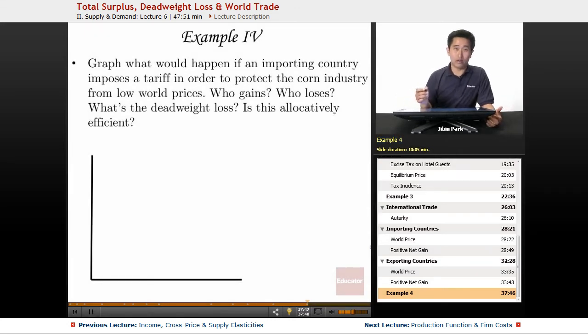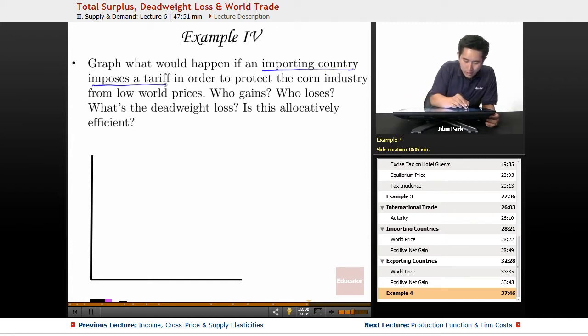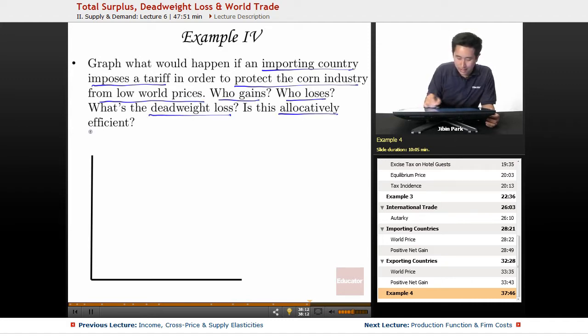Here's example number four. I'm going to add a little bit more of a twist here and show an example with trade and what happens when a tariff is actually imposed. So graph what would happen if an importing country imposes a tariff in order to protect the corn industry from low world prices. Who gains? Who loses? What's the deadweight loss? And is this allocatively efficient? I asked a multitude of questions here but I kind of want to mirror a question that you actually might see on the AP exam.